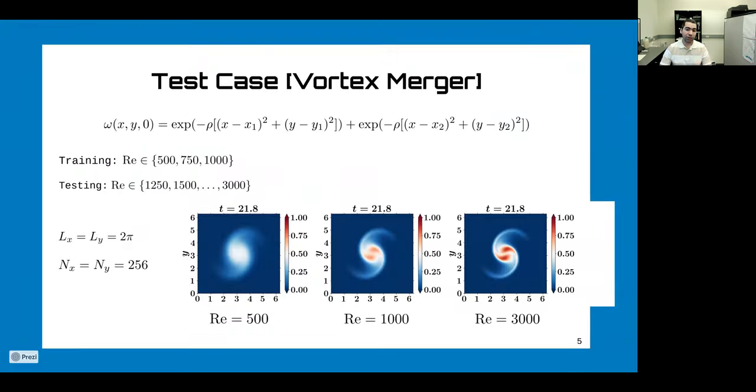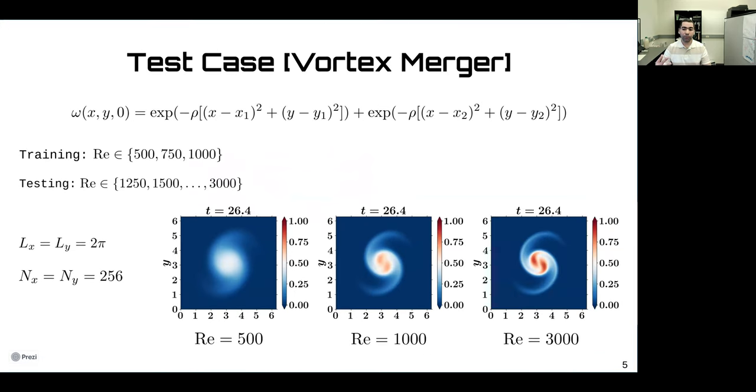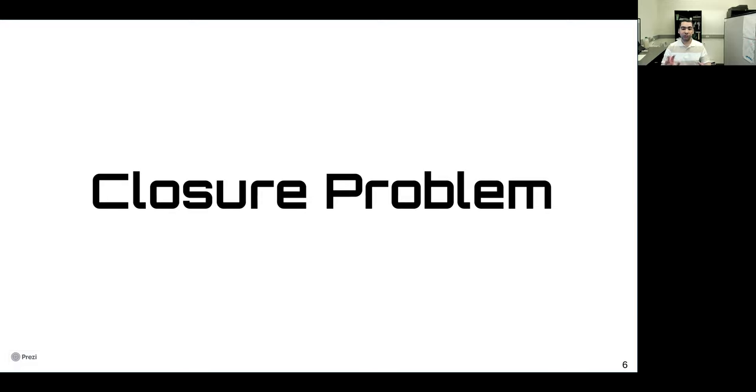Our test case is the vortex merger problem. We start with two vortexes within a small distance, and they rotate in the same direction. By the time they interact with each other to form one big vortex. We build the reduced order model using some datasets corresponding to some values of the Reynolds number, and we test the performance at different values of the Reynolds number. In the beginning, I will focus on the closure problem, which is the effect of the truncated scales into the dynamics of the retained scales.